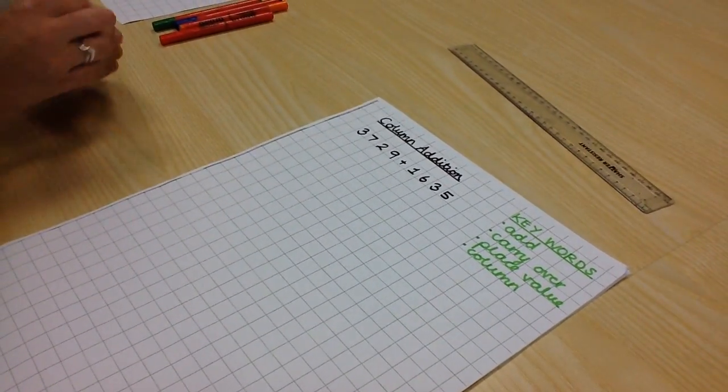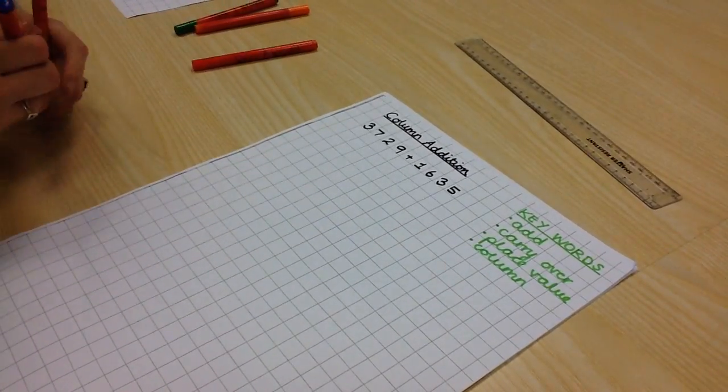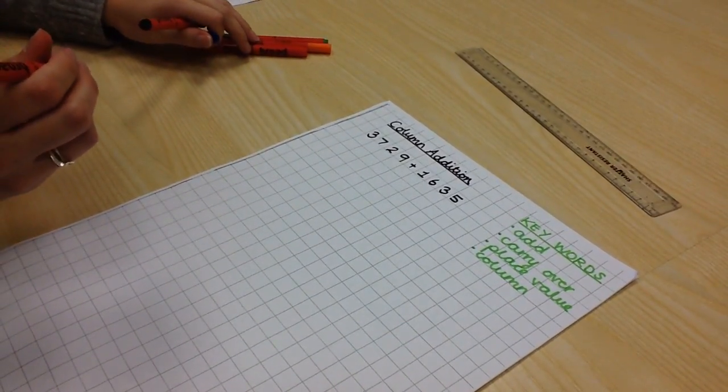Line up the four digit numbers according to place value. You can use column headings if you choose to.